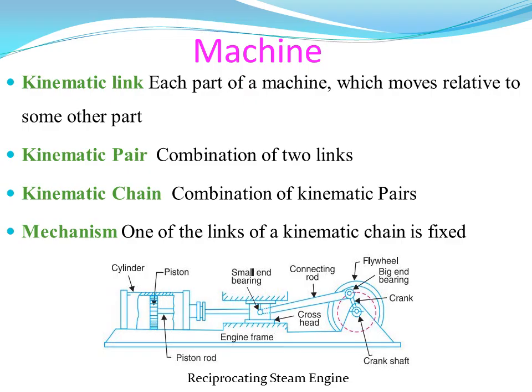Next, what is a kinematic pair? It is a combination of two links. If you combine two links, we get a kinematic pair. For example, the crank and connecting rod are two components — that is a kinematic pair. The crank and engine frame are also two components forming a kinematic pair.